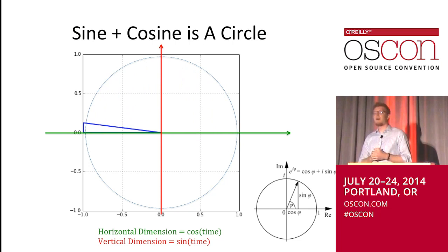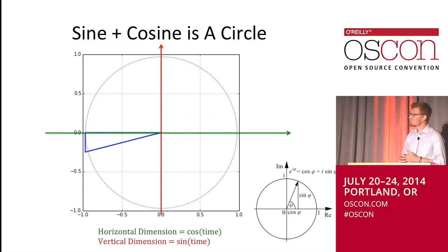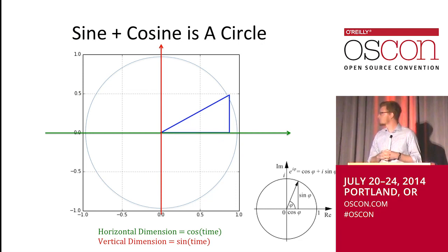Since mathematicians like to complicate things, we have special names for those axes. The horizontal axis is usually called the real axis, and the vertical one is called imaginary. It's not actually imaginary — it is just called that sometimes. So if you see that term, don't be afraid.